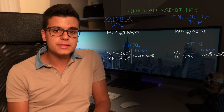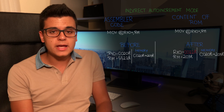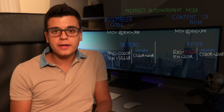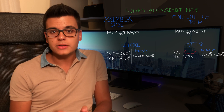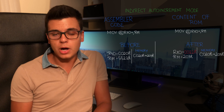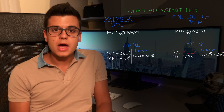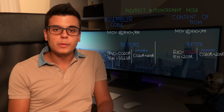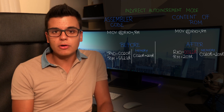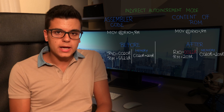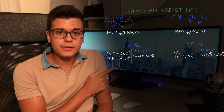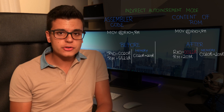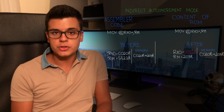An interesting addressing mode is the indirect auto-increment mode. This is similar in syntax to the indirect register mode — it just has a plus sign at the end. The auto-increment naming comes from the fact that the value of the register being referenced gets automatically incremented by either 1 or 2, depending on the operation type, after the operation takes place. This means that we can read from successive addresses without having to explicitly increment the value of the register. As you can see from the example, the value of R10 gets actually incremented automatically. Just like indirect register mode, this only works for source operands.